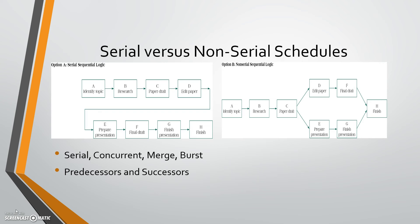Serial obviously means that things are going in a certain order. Concurrent means they're happening in parallel. Now there are things called merge activities — basically where several activities merge into one. On the right picture here you can see F and G merging into H. This can happen anywhere within the schedule where two or more activities are merging into one task or one activity.